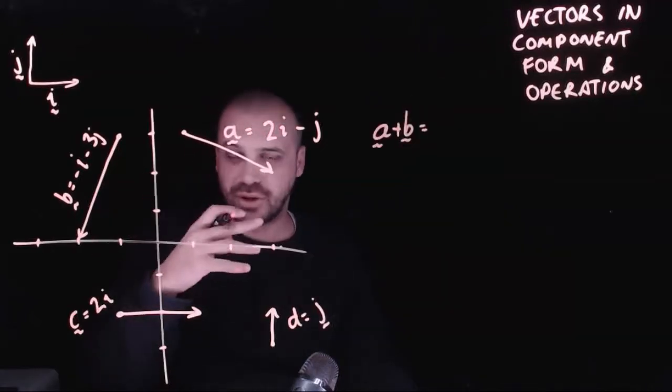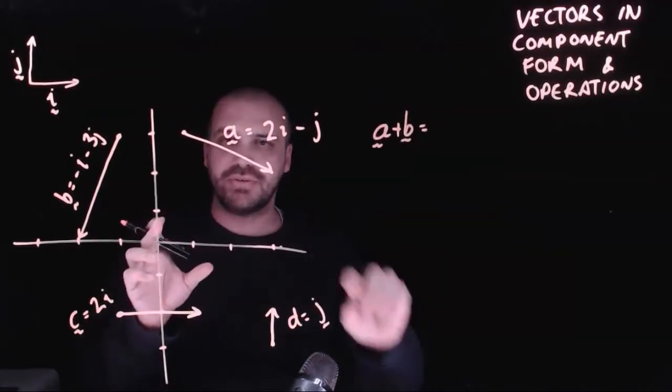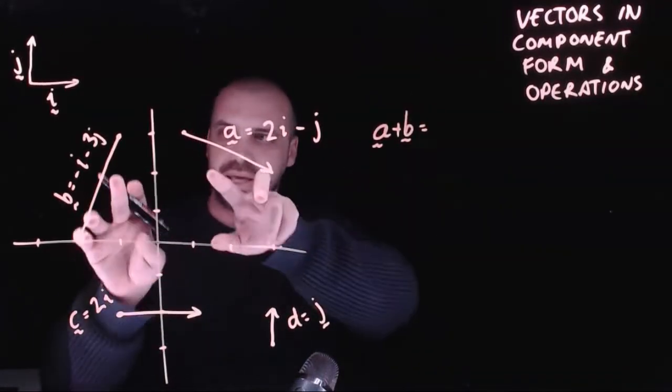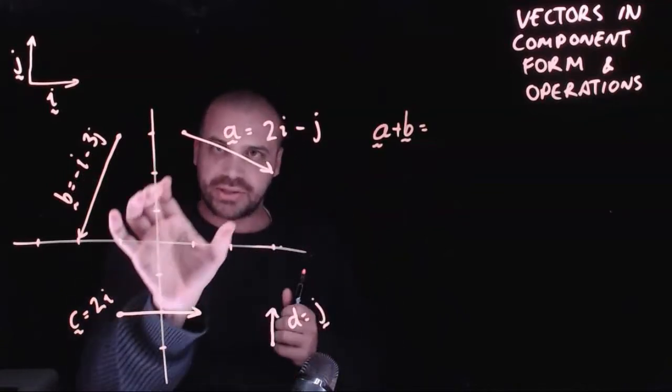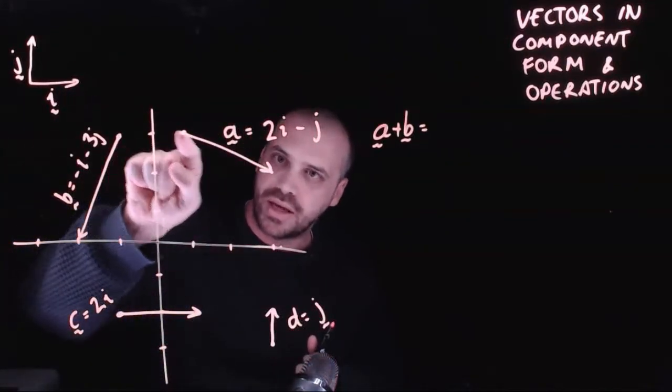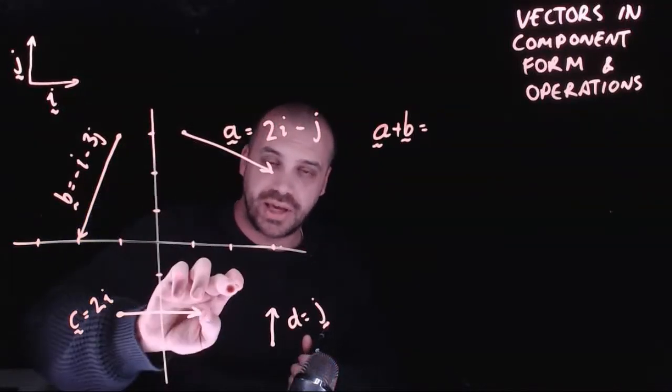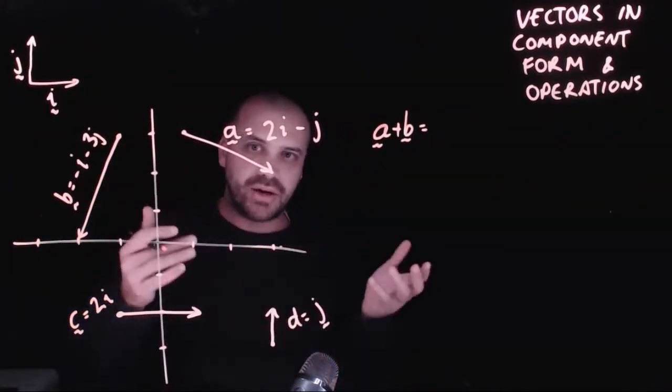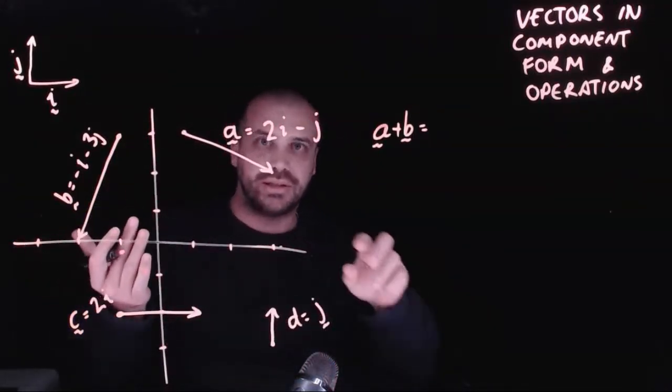Now doing this makes our life really, really simple. Because if we want to add vector a and b together, in the past, we took this vector, we grabbed vector b, moved it over to here, drew a line from the start of a to the end of b. But now we can do the whole thing algebraically.